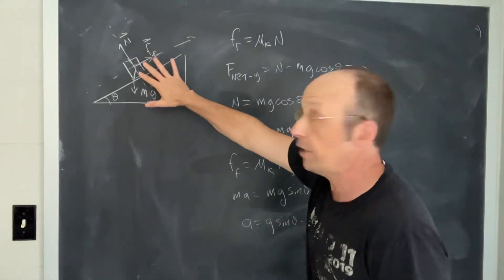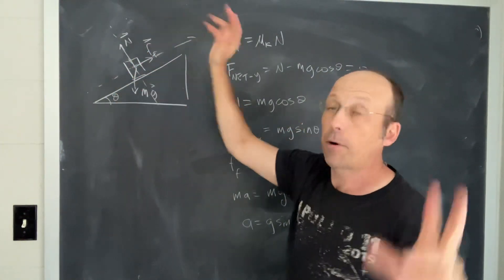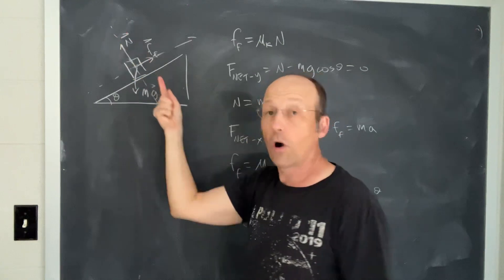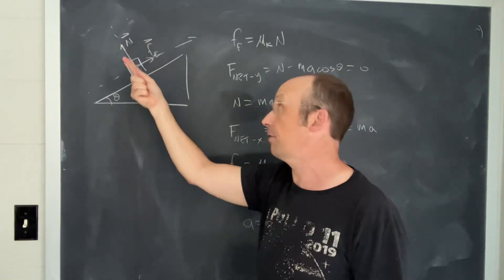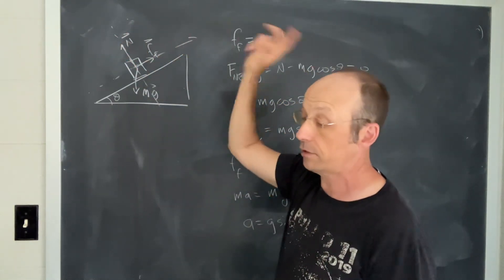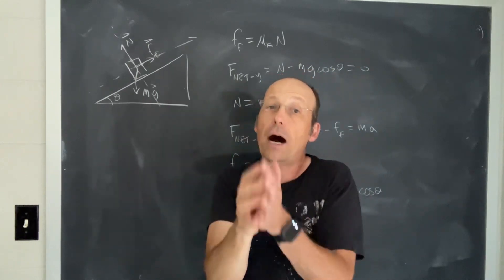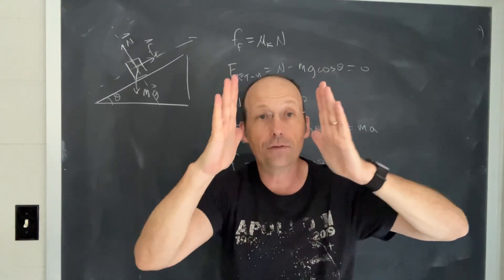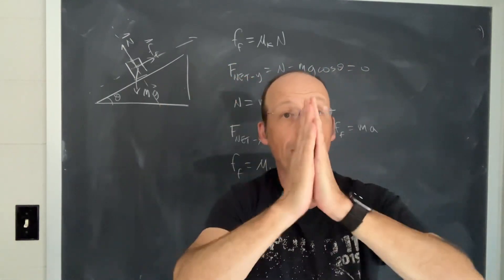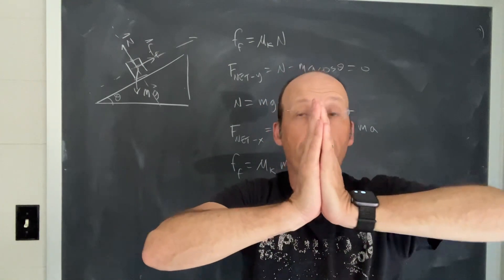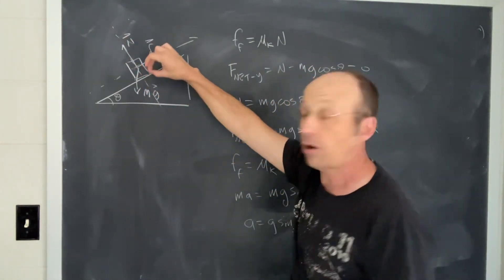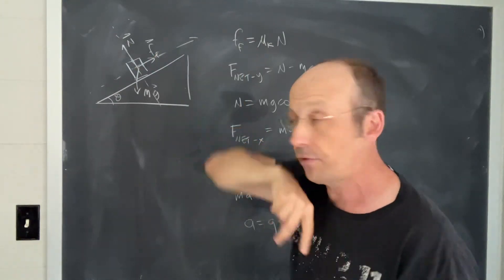So I have three forces acting on the person: the downward gravitational force, the normal force that points perpendicular to the slide, and then the backwards-pushing friction force. The way that we model friction is that the magnitude depends on how hard those two surfaces are pushed together, which is the normal force. So if you push those things harder together, then you're going to increase the friction.